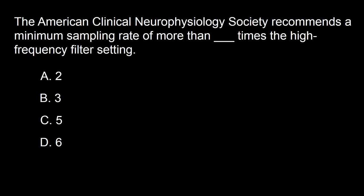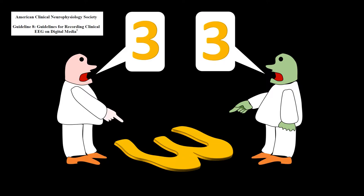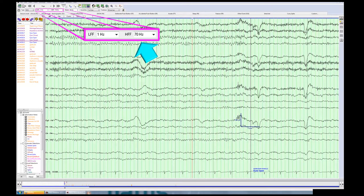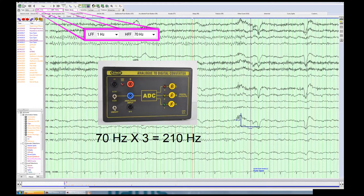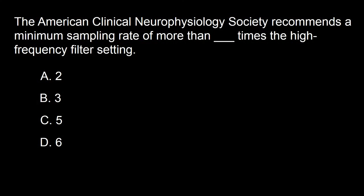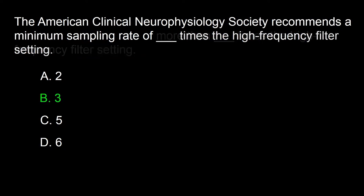Next question: the American Clinical Neurophysiology Society recommends a minimum sampling rate of more than dash times the high-frequency filter setting. A: 2, B: 3, C: 5, D: 6. The ACNS recommends a minimum sampling rate of more than 3 times the high-frequency filter setting. So if we are using a 70 Hz high-frequency filter, the analog-to-digital converter should have a sampling rate of at least 210. The recommended number by the Academy is 256 samples per second. The answer is B.